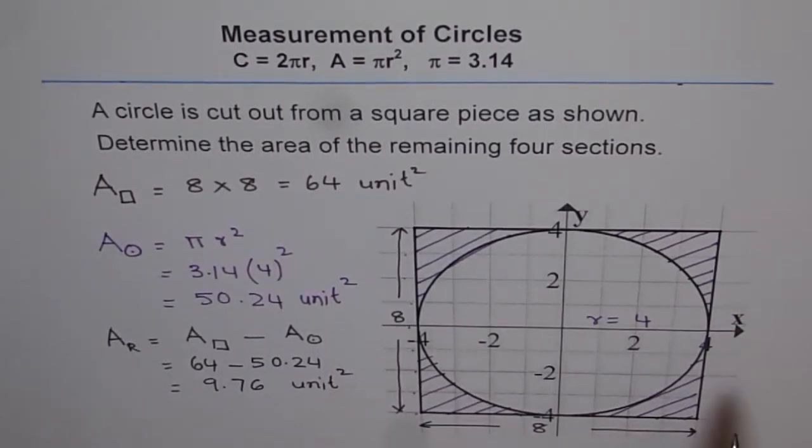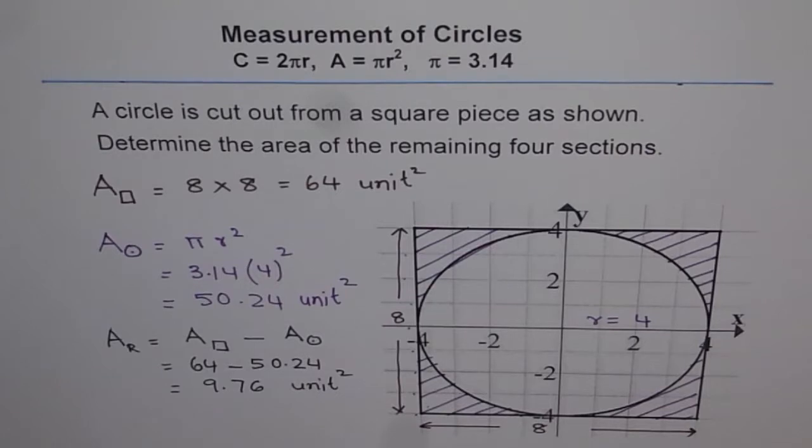So, area of remaining four sections is 9.76 unit square. I hope you understand and appreciate the method. So the method is, first find the area of the square by multiplying its sides. So side square. In our case, the side was 8 units each. And therefore, area of the square was 64 units square.